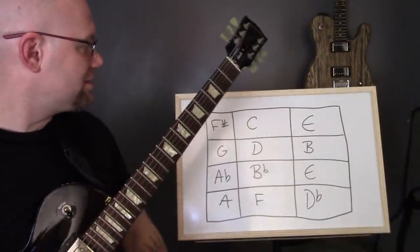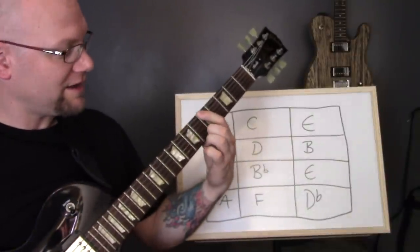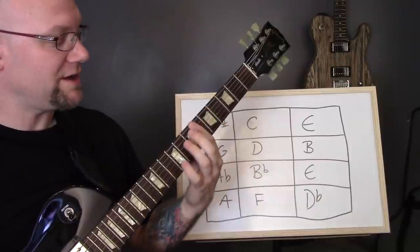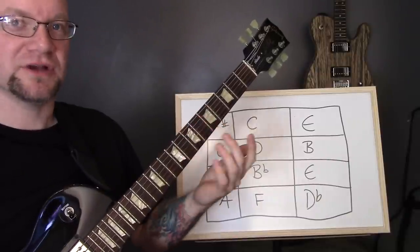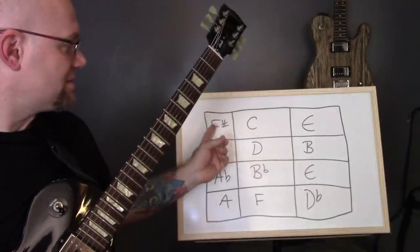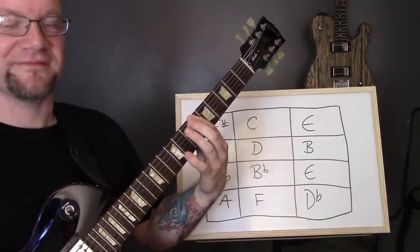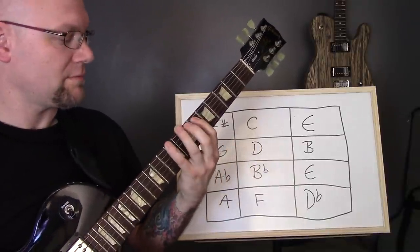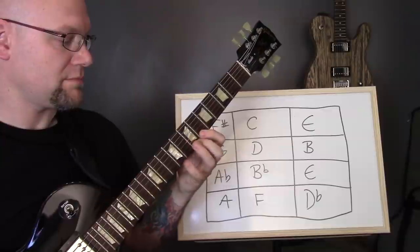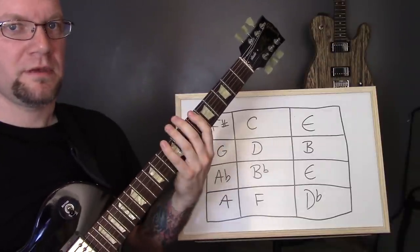So F sharp major. So the first note after here that's in the key of F sharp major is here, A sharp. So let's play an F sharp major scale in this position. The first note is here because that's the first note in the scale.